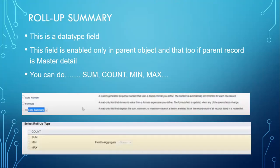Coming to roll-up summaries. This is a data type field. This field is enabled only in the parent object, and that too only if the parent record is master-detail. Sum, count, min, and max can be done in this. It is very simple and easy — for standard types of calculations, we can use the roll-up summary field. A few screenshots you can see here.